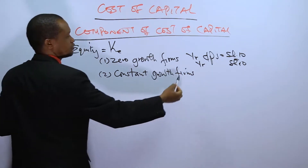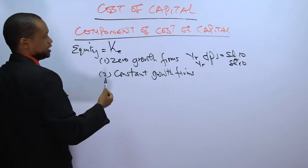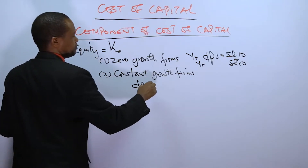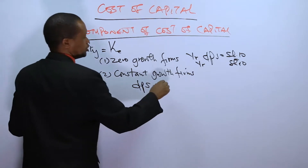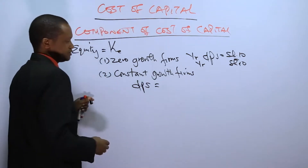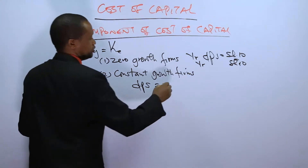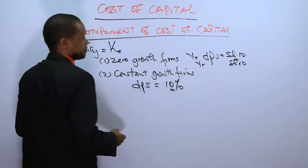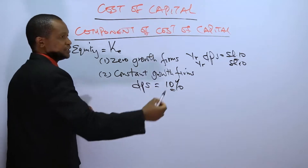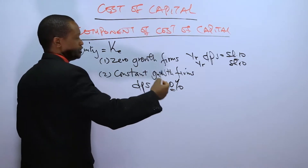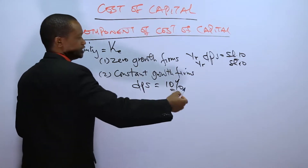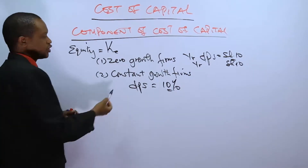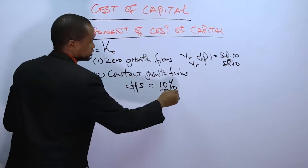A constant growth firm is a firm where the dividend per share is growing at a constant rate. For example, 10% — every year there is a constant growth in dividend per share at the rate of 10%.